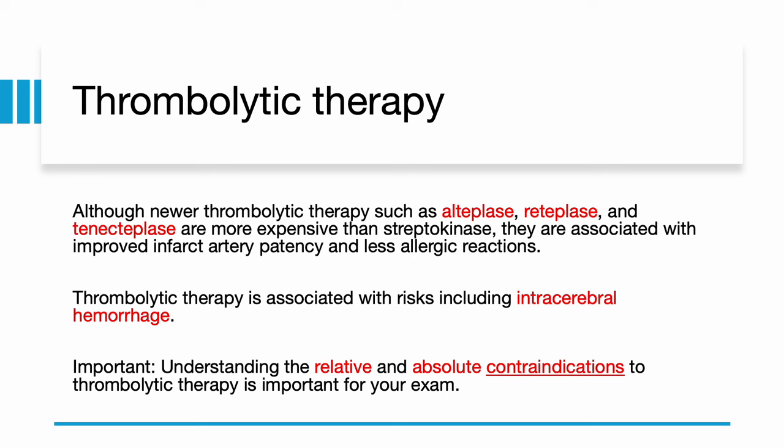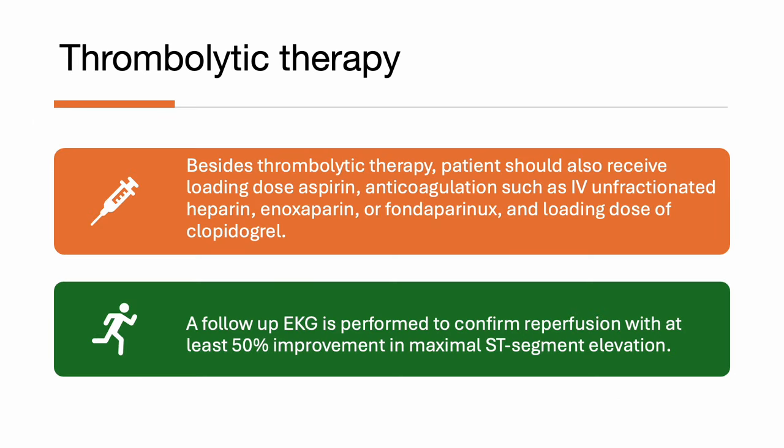Although newer thrombolytic therapies such as alteplase, reteplase, and tenecteplase are more expensive than streptokinase, they are associated with improved infarct artery patency and fewer allergic reactions. Thrombolytic therapy is associated with risk, including intracerebral hemorrhage, and therefore understanding relative and absolute contraindications is important. Besides thrombolytic therapy, patients should also receive loading dose aspirin, anticoagulation such as unfractionated heparin, enoxaparin, or fondaparinux, and a loading dose of clopidogrel.